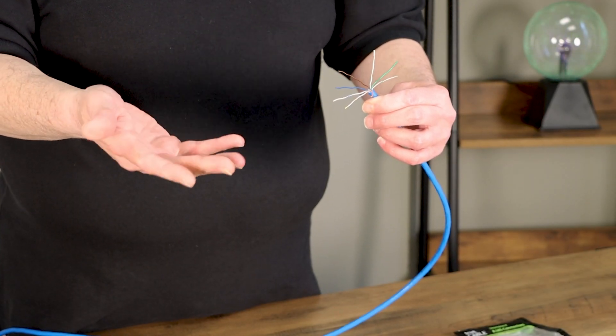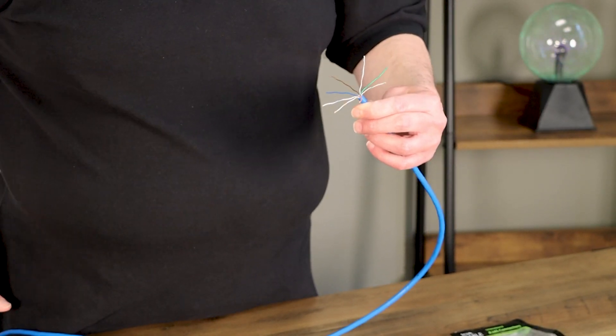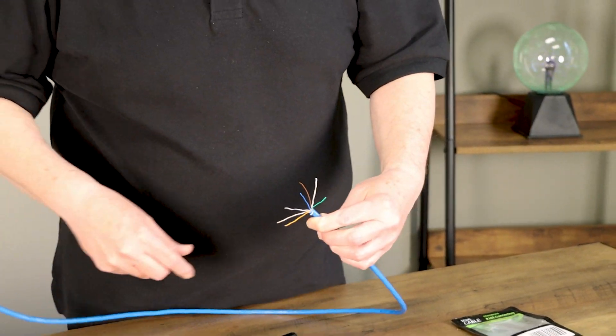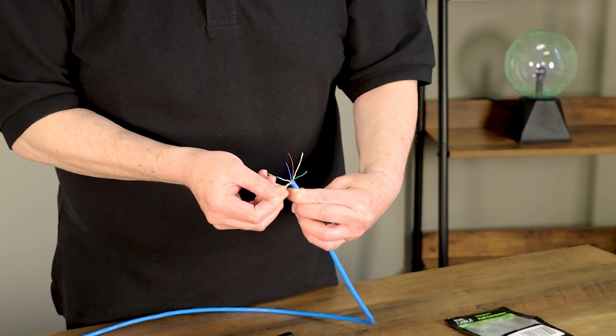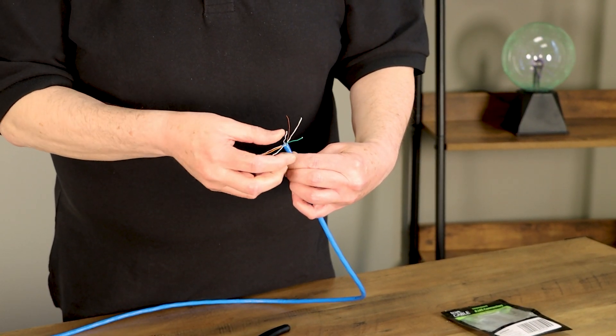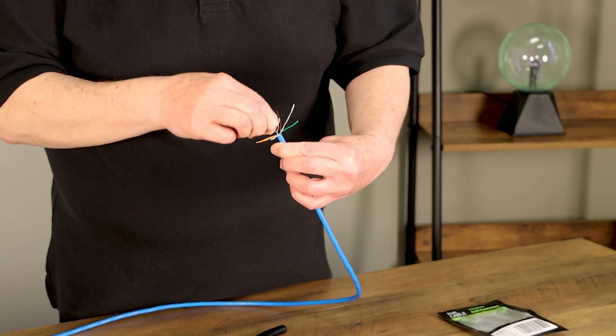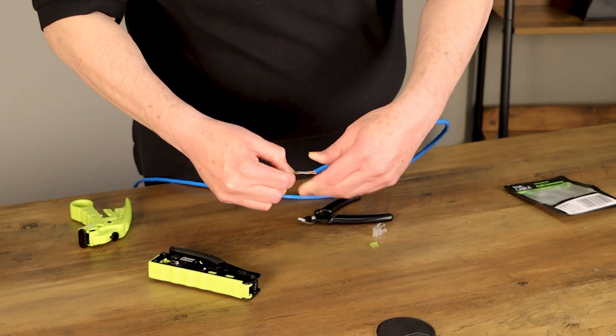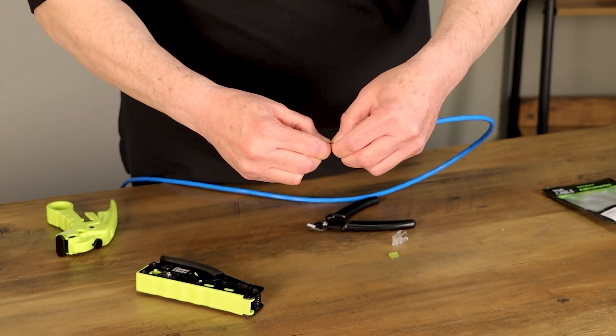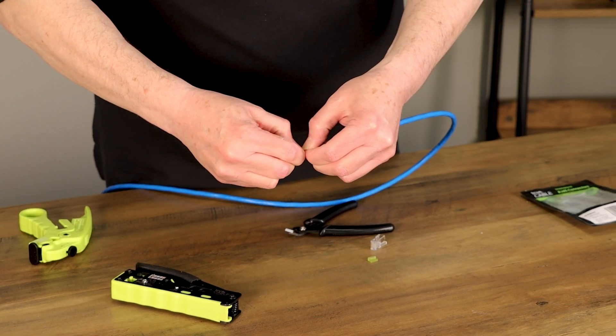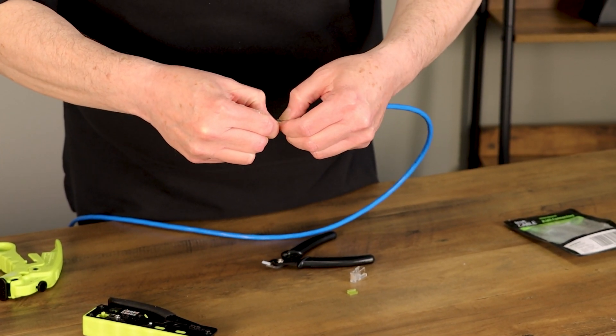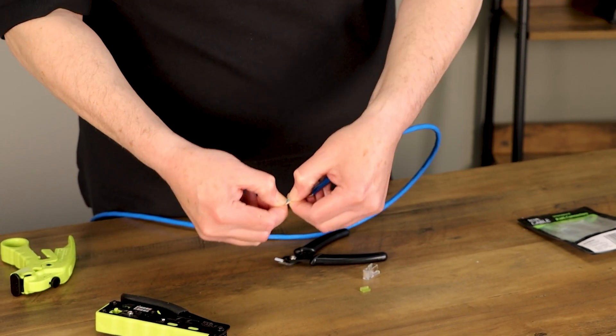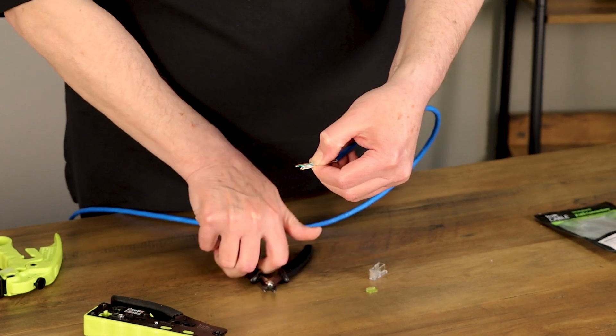I'm going to use the T568B sequence because that's the sequence I used at this end of the cable, so I'm going to make them the same. And that is white-orange, orange, white-green, blue, white-blue, green, white-brown, and brown. And leave yourself enough room to flush cut and get the load bar on. Okay, so white-orange, orange, white-green, blue, white-blue, green, white-brown, brown. That's a pretty likely spot right here to flush cut, so we'll flush cut.